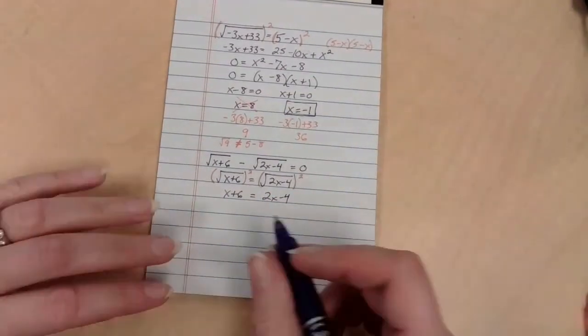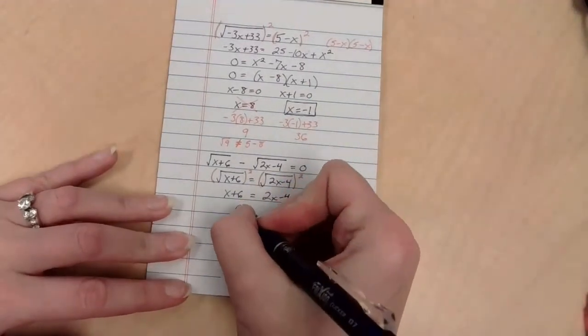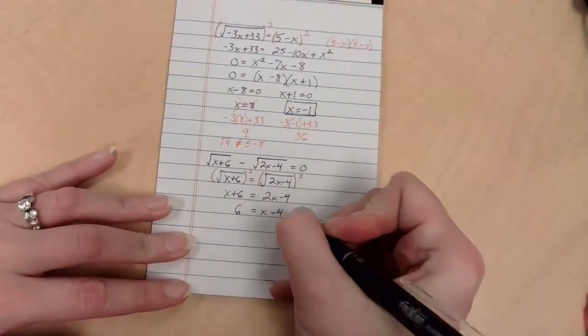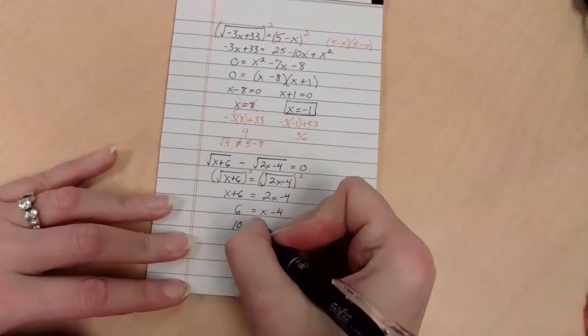Well, that's alright. So if I subtract x, I'll get 6 equals x minus 4, and I can add 4, and x is 10.